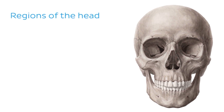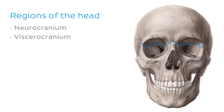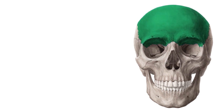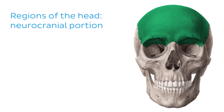The head is divided into quite a few regions, and these regions are in turn grouped into either regions of the neurocranium or regions of the viscerocranium. Drawing a line on our image of the skull shows roughly where this division occurs — above the line we have the neurocranium, and below it we have the viscerocranium. Essentially, the neurocranial portion protects the brain and the viscerocranial portion forms the face.